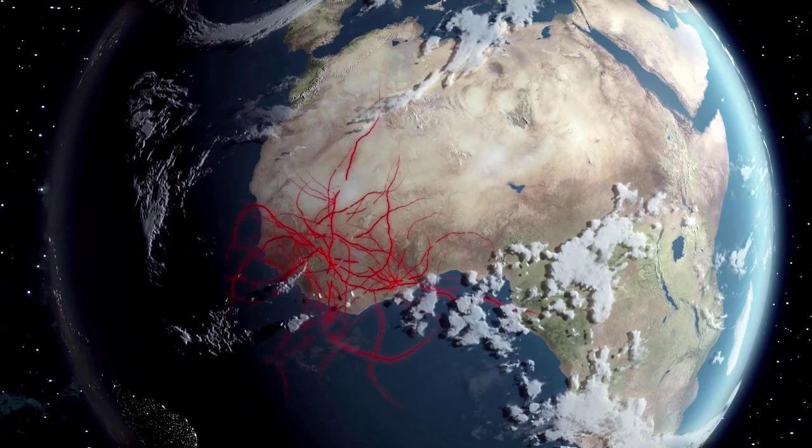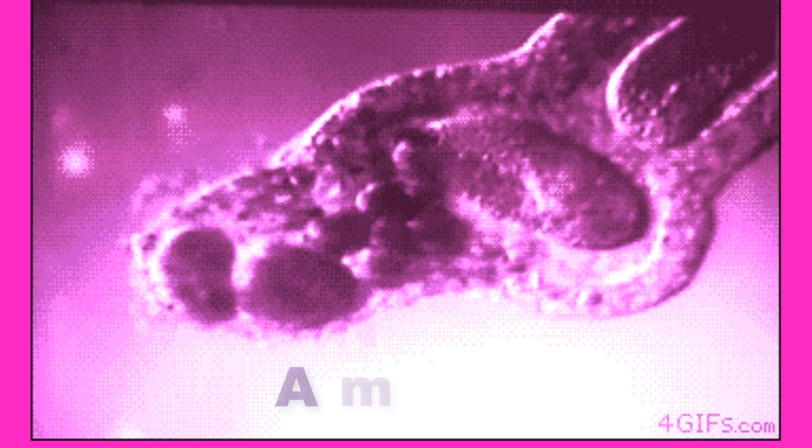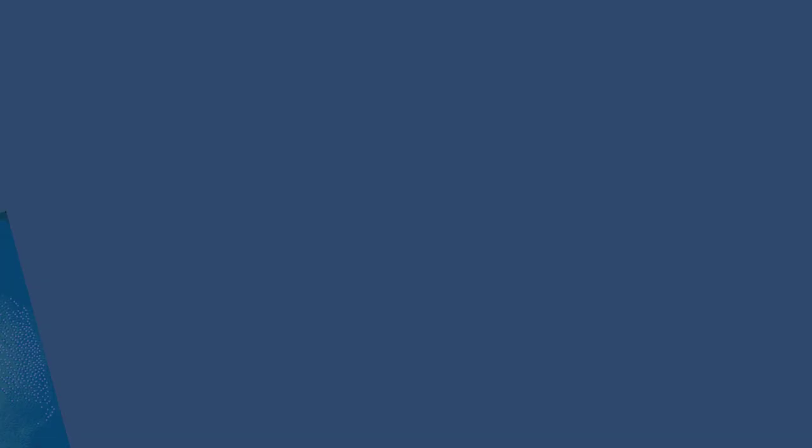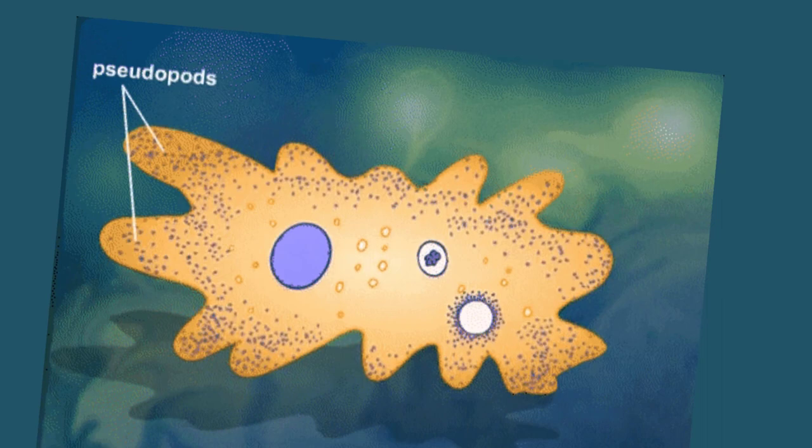Another supergroup is the Amoebazoa. The amoebas are mostly free-living, single-celled organisms, but they can be as large as one millimeter in diameter. They usually live in freshwater or marine environments and reproduce by binary fission. The amoeba are soft-bodied organisms that have the ability to change shape — amoeba meaning to change. This shape change occurs as their cytoplasm flows into a temporary formless cytoplasmic projection called a pseudopod, meaning false foot, which allows for motion called amoeboid motion.